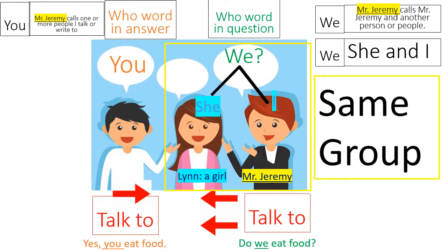When the who word in the question is 'we,' the who word in the answer is 'you.' So if two people are in the same group — for example, here we have a girl we can call 'she' and Mr. Jeremy calls himself 'I' — so 'she and I' together we can call 'we,' talking to this boy in the white shirt who is not part of the same group during this conversation.